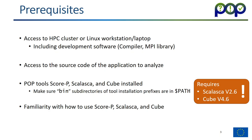If you want to follow along, you need the usual things for our online training modules: access to an HPC cluster or Linux workstation or laptop where you have development software installed, like compilers, MPI library, and so on. You must have access to the source code of the application you want to analyze, and you need the POP tools Scorep, Scalasca, and Cube installed.